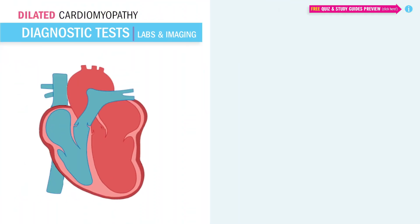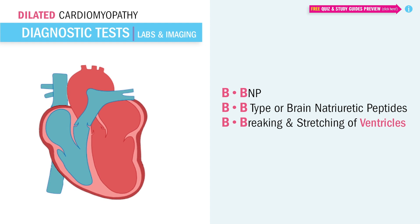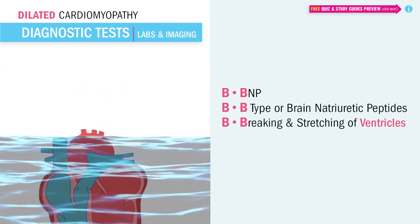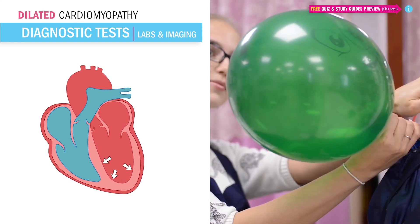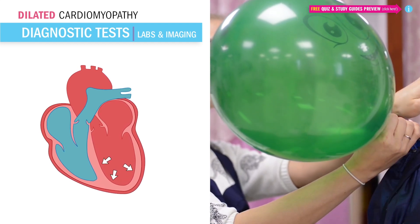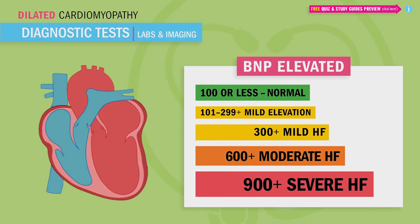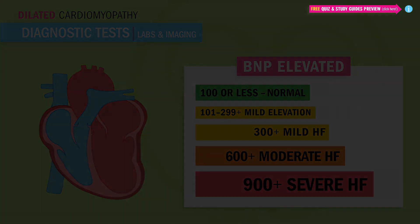For labs, an elevated BNP — B-type or brain natriuretic peptide — indicates non-specific stretching, tearing, and damage to the heart, and is usually an indicator of fluid overload in heart failure. In dilated cardiomyopathy, BNP is elevated because the ventricles are being stretched out and thinned like an overblown balloon. A BNP over 100 is not good: over 300 is mild, and over 600 is moderate.